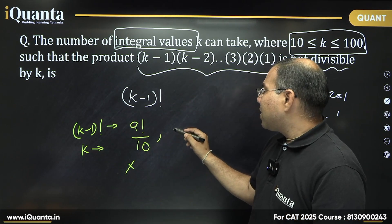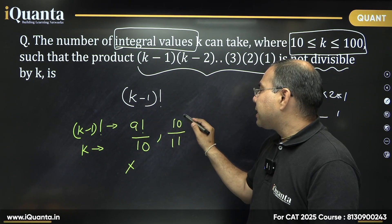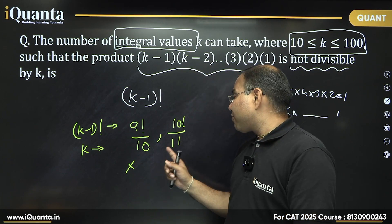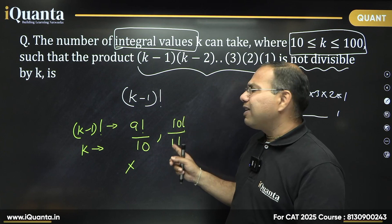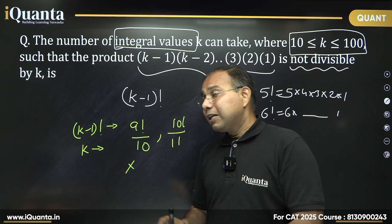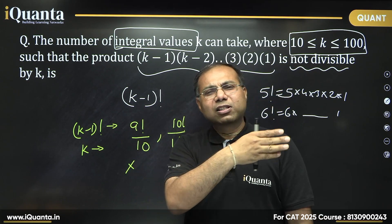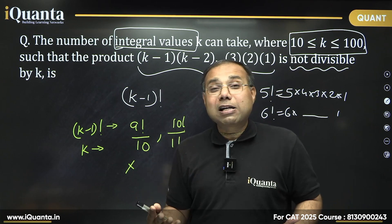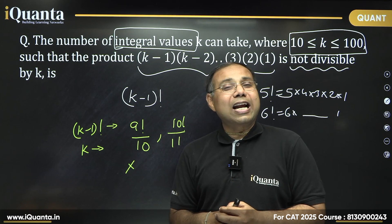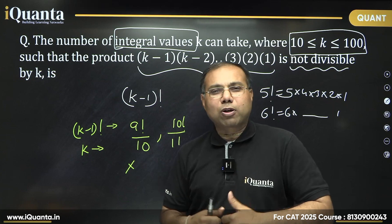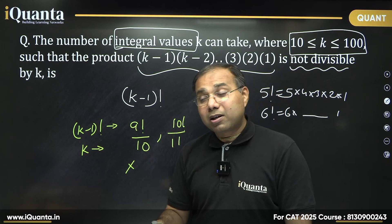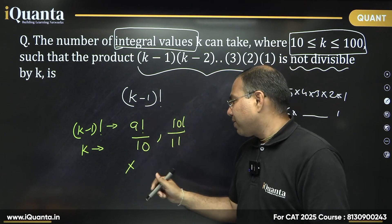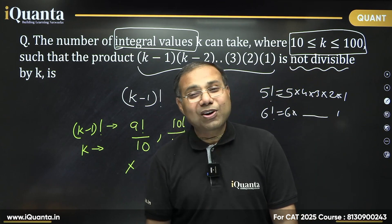Next, take k = 11. This gives us 10!. Is 10! divisible by 11? The key point: look at the prime factors of 11. But 11 itself is a prime number! No number in 10, 9, 8, 7, 6, 5, 4, 3, 2, 1 is a multiple of 11. Numbers that are not multiples of 11 cannot create a multiple of 11 by multiplying together — that is the meaning of a prime number. So 11 does NOT divide 10!, meaning k = 11 satisfies our condition because it is prime.